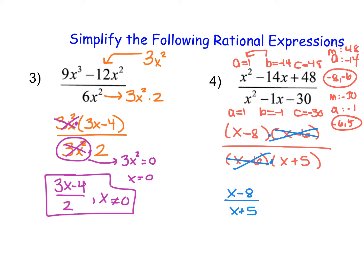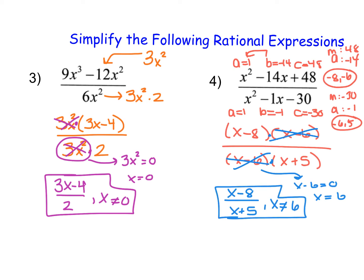We always have to note that if we canceled out something with x in the denominator, we need to record when it equals zero. Since x minus 6 equals zero when x equals 6, while x minus 8 over x plus 5 is the simplified expression, we must note that x cannot equal 6 in the original expression.